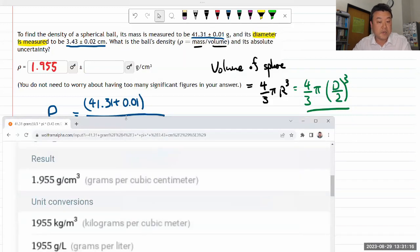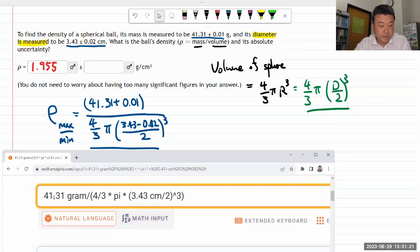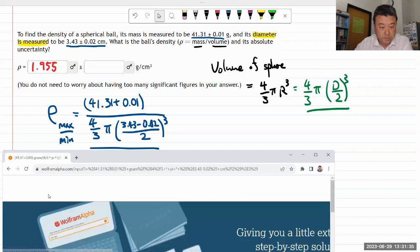Let me put in for the mass that's going to be plus 0.01, for the diameter it's going to be minus 0.02. Everything else doesn't need to change.